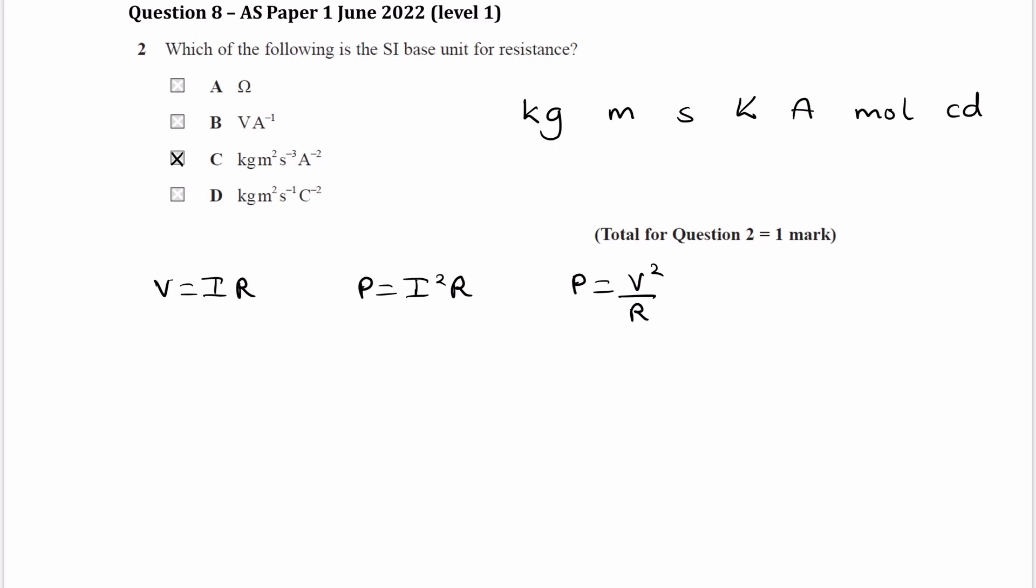So we can rearrange any of these equations and then, with the remaining quantities, make substitutions by using different equations to eventually break down those quantities into SI base units. And I think the easiest one is this one, though none of them are particularly easy.